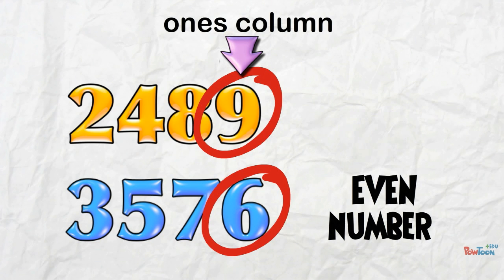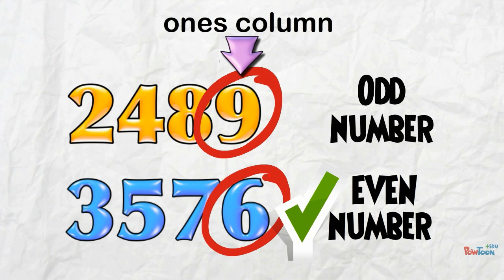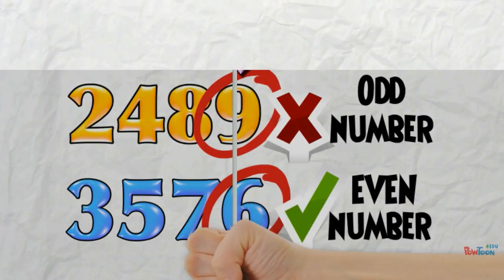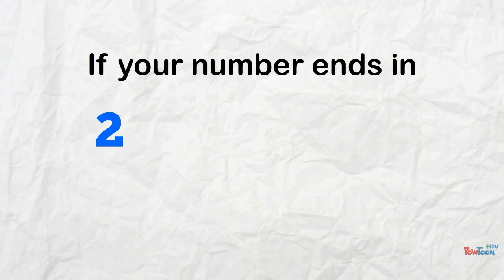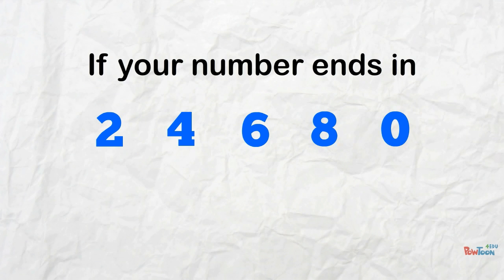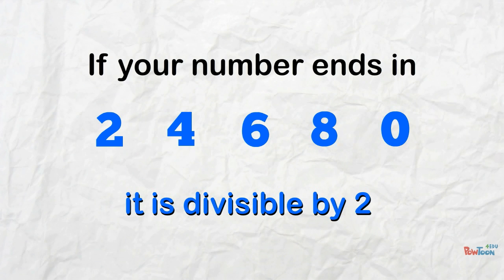If you have an even number, then it is divisible by 2. Odd numbers are not. So if your number ends in 2, 4, 6, 8, or 0, you know just from a glance it is divisible by 2. And if a number is divisible by 2, then 2 is a factor.